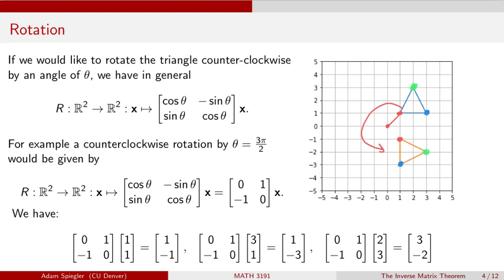And again, if we wanted to rotate it by some other amount, then we just change the angle theta and that's going to change this matrix over here. So next, let's take a look at what happens if I want to compose the three transformations we've looked at so far. That would be a scaling, a vertical shearing, and a rotation.